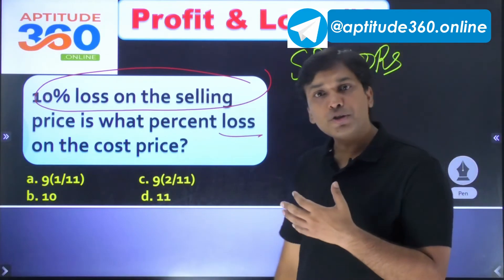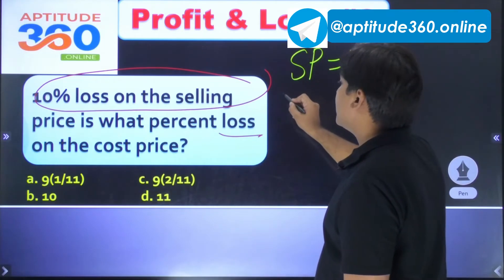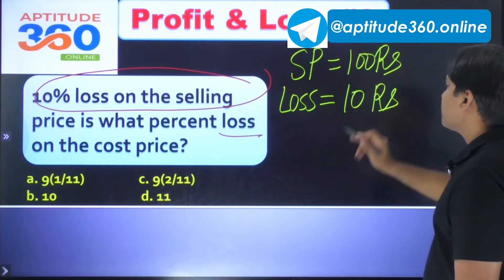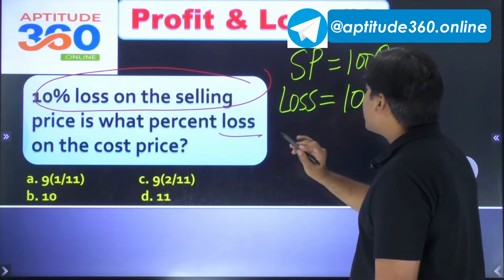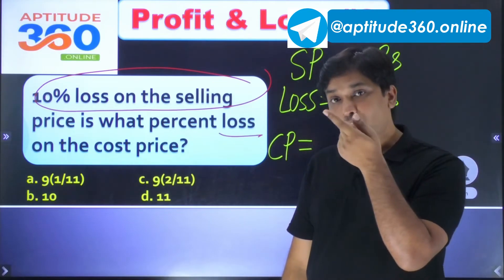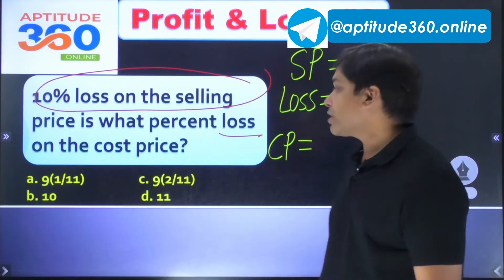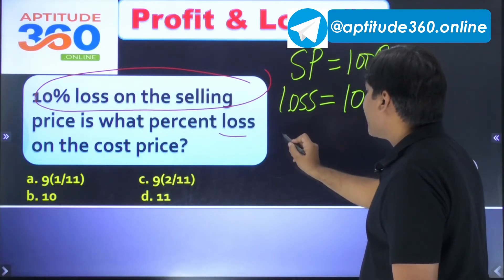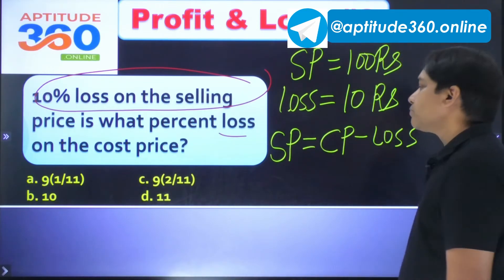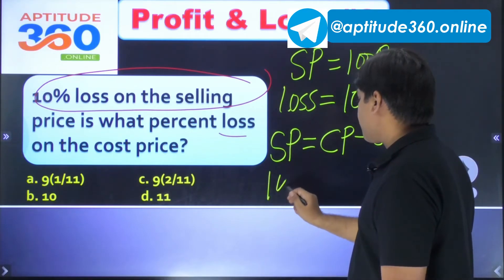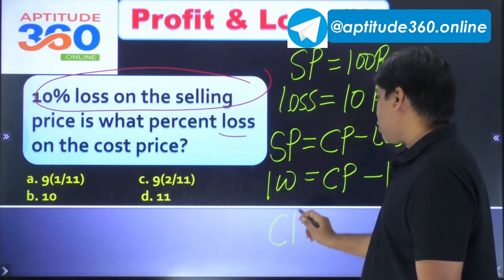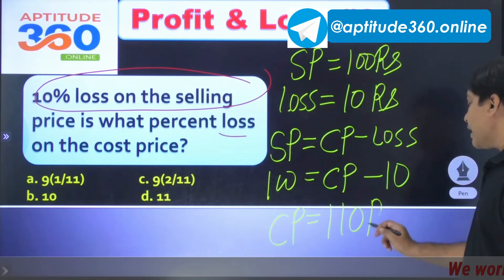Loss is 10% of 100 rupees, which is 10 rupees. Now, in a loss situation, cost price is more than selling price. Selling price equals cost price minus loss, so: 100 equals CP minus 10, therefore cost price is 110 rupees. Majority of students will mistakenly say cost price is 90 rupees — that would be wrong, since in a loss situation cost price must be greater than selling price.